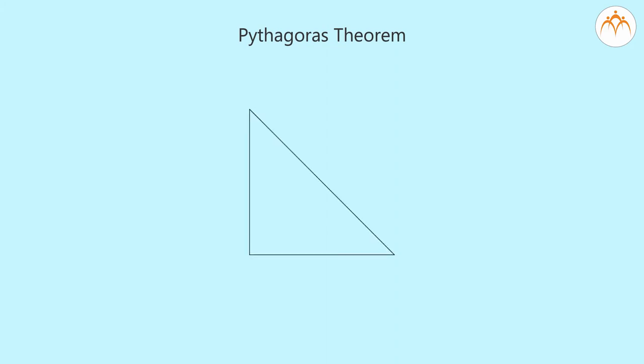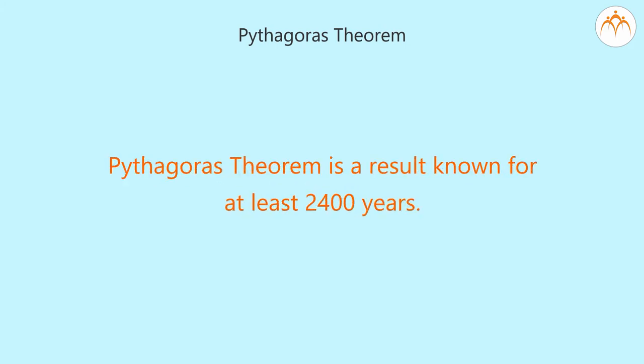In a right angled triangle ABC with right angle at C with sides A, B and C, C is the length of the hypotenuse. We have A square plus B square equal to C square. This is a well known theorem. Most people who have once studied in school are familiar with Pythagoras theorem. At least everyone remembers that there was a theorem named Pythagoras theorem. It is a result known for at least 2400 years.